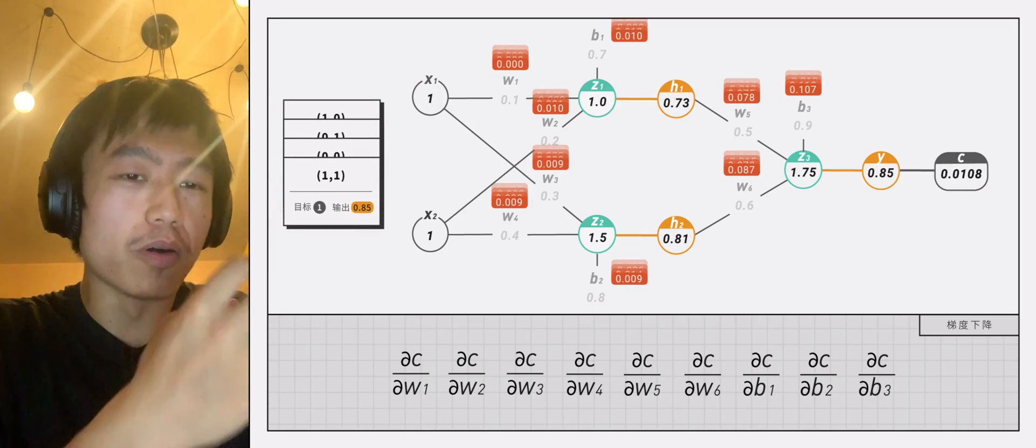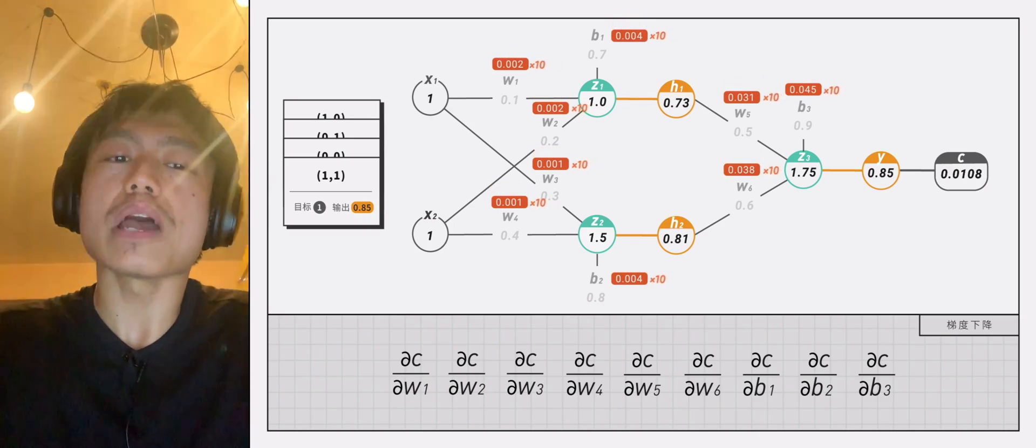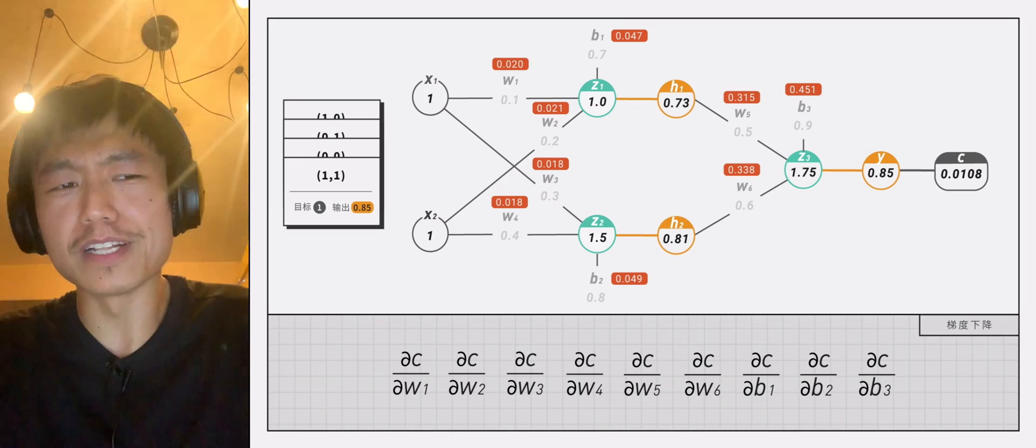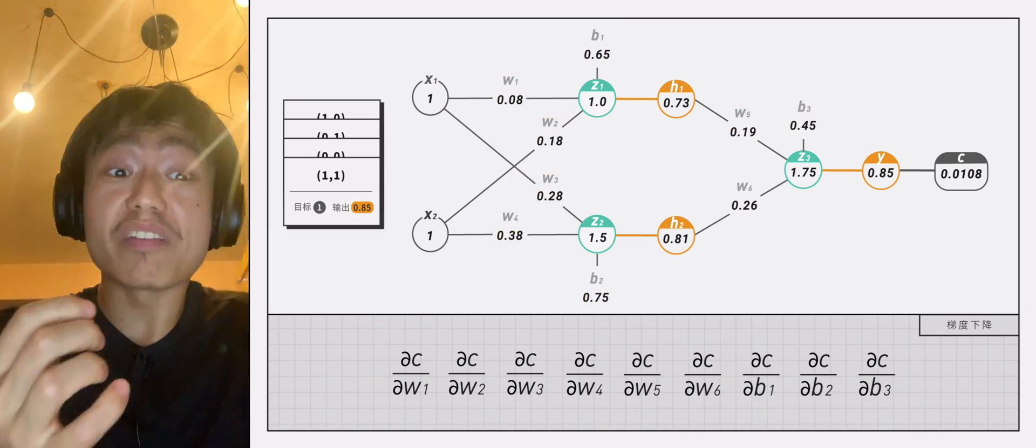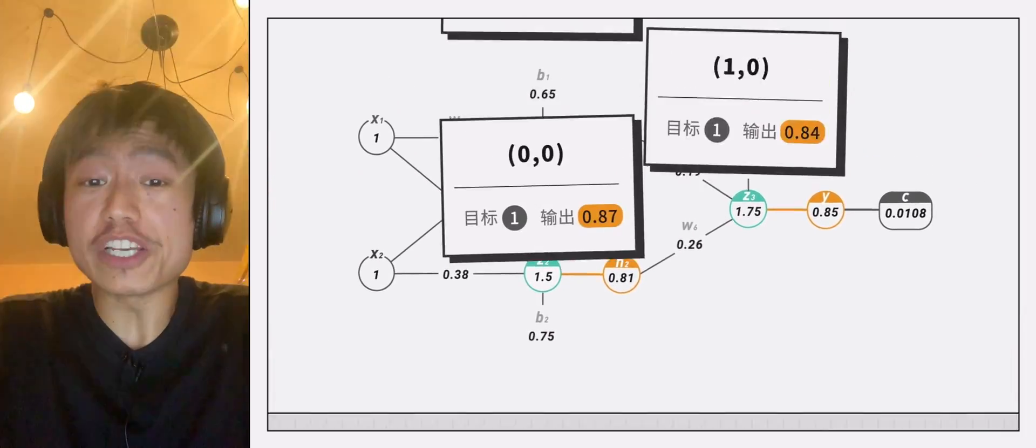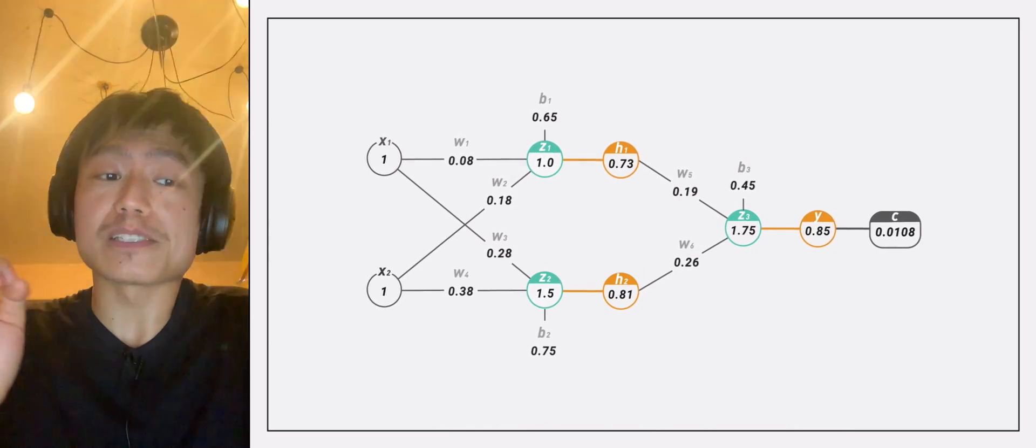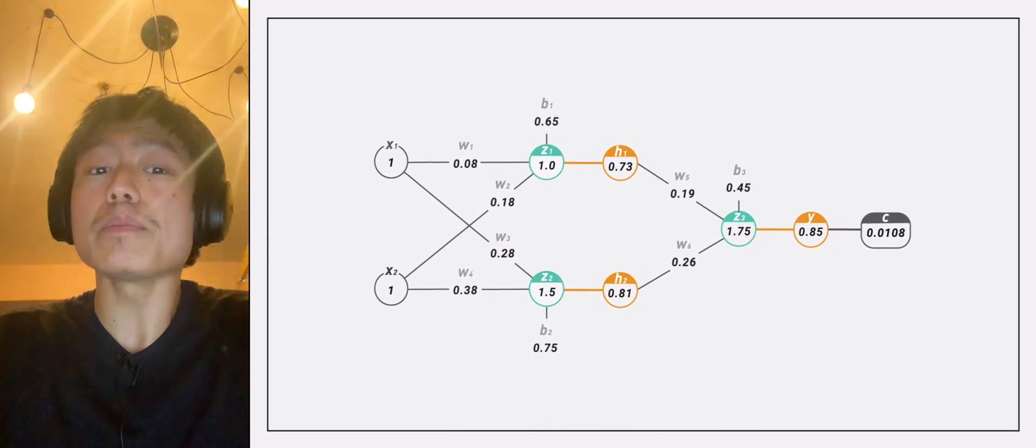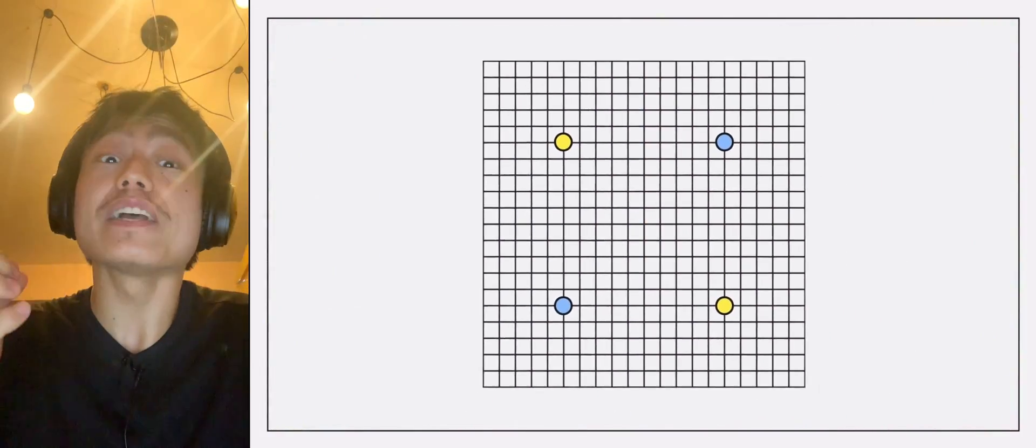After traversing these four points, we need to average the four partial derivatives of each variable, multiply it by the step size, then we will get a value that the variable should change in this iteration. In this way, each iteration can make the results of these four examples more accurate. So after several rounds of gradient descent, our neural network can automatically separate these four points.